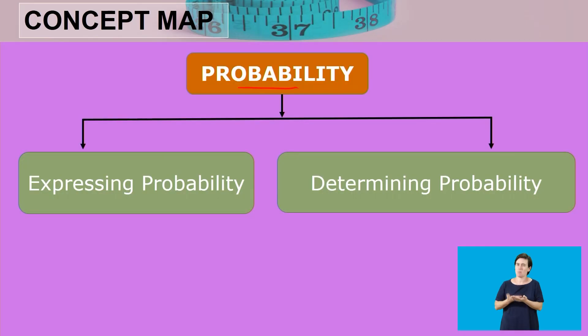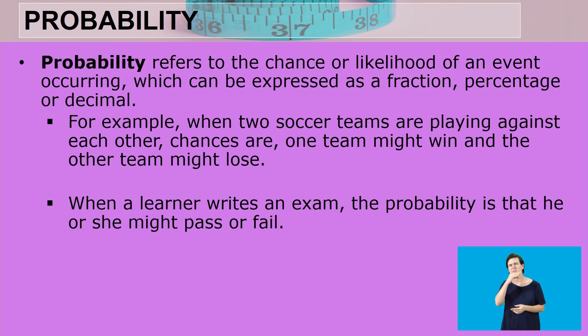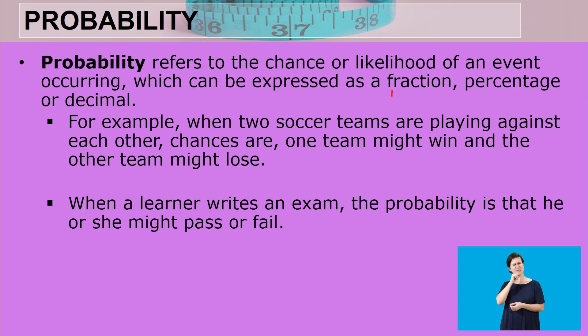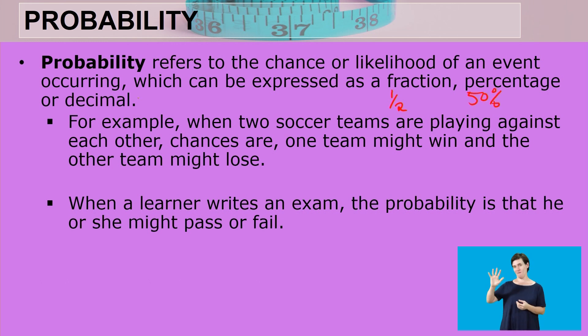Welcome back learners. Let's continue — we're going to look at probability. Probability refers to the chance or the likelihood of an event occurring, which can be expressed as a fraction, a percentage, or a decimal number. For example, if there's a 50% chance that something will happen, as a fraction that is 1 over 2, as a percentage it is 50%, and as a decimal it is 0.5.